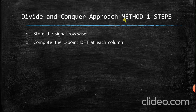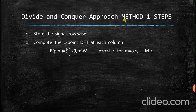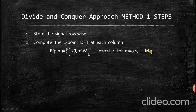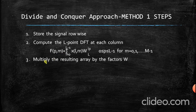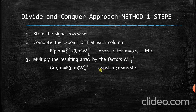The second step is to compute the L-point DFT at each column. The L-point DFT equation is given as capital F of P comma M equals sigma over L from 0 to capital L minus 1, and so on up to capital N minus 1. The resulting array obtained after the second step is capital F of P, M. The third step is to multiply that array by the twiddle factors W_NPM, where P ranges from 0 to capital L minus 1 and m ranges from 0 to capital M minus 1. Capital G of P, M equals capital F of P, M times W_NPM.